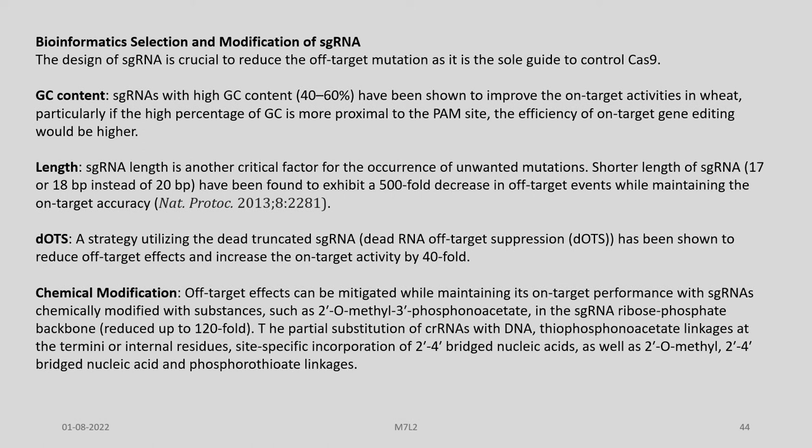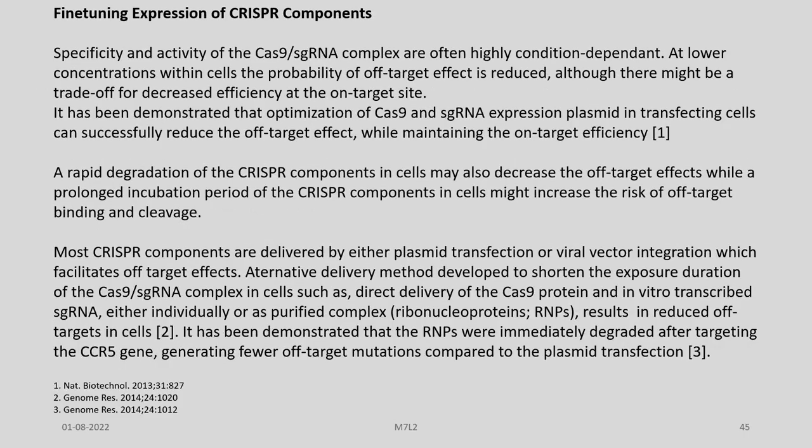Chemical modification is another strategy to mitigate off-target effects while maintaining on-target performance. Single guide RNAs chemically modified with substances such as 2′-O-methyl-3′-phosphonoacetate in the sgRNA ribose-phosphate backbone can reduce off-targeting up to 120-fold. The partial substitution of CRISPR RNAs with DNA phosphonoacetate linkages at the termini or internal residues, site-specific incorporation of 2′-4′ bridged nucleic acids, as well as 2′-O-methyl, 2′-4′ bridged nucleic acid, and phosphorothioate linkages are also suggested.